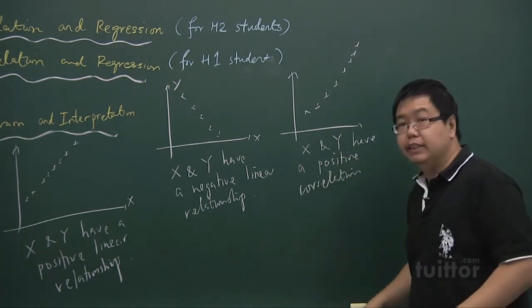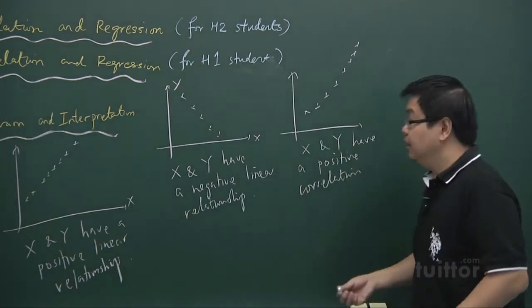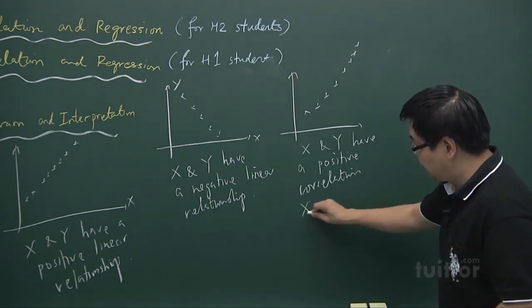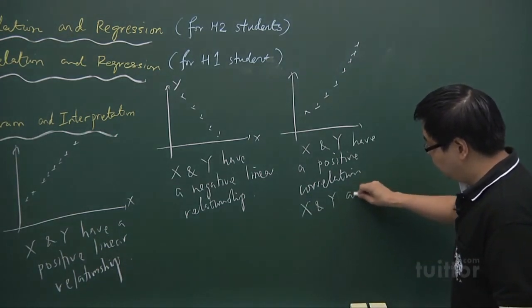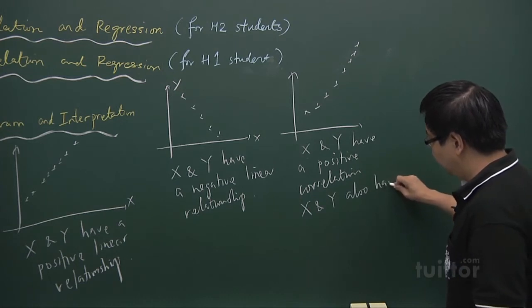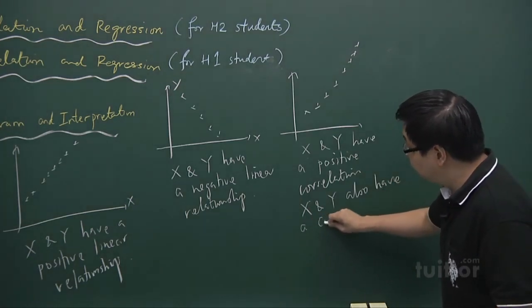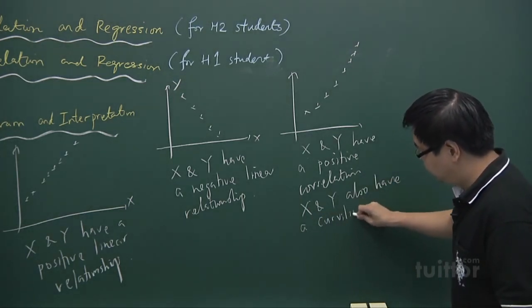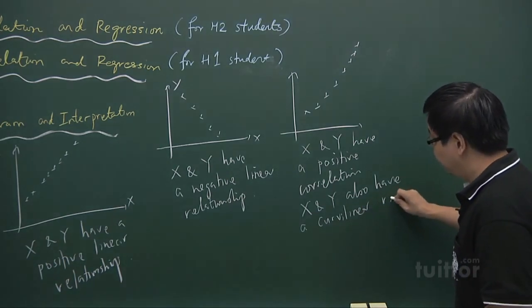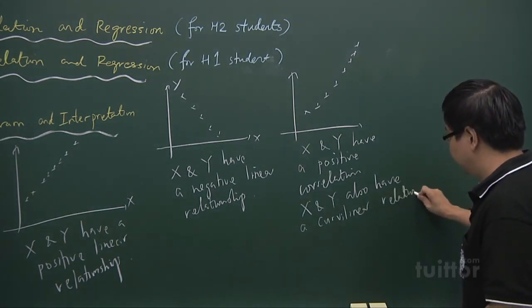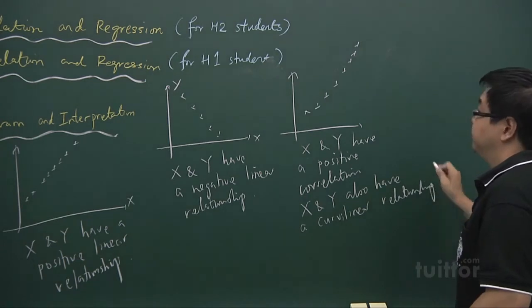That means that x increases, y increases. And we can also say that x and y have a curvilinear relationship, because it's in the form of a curve.